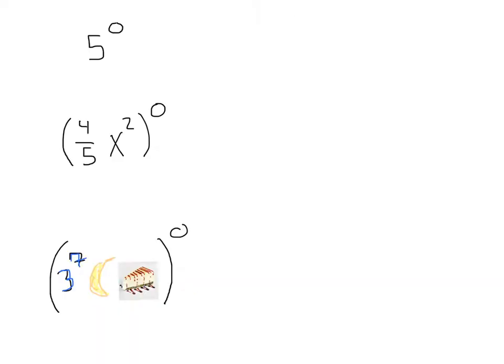Let's do some quick practice to make sure you have the hang of it. Here we have 5 to the 0 power. Since it's to the 0 power, that's going to equal 1. Here we've got 4 fifths x squared, all to the 0 power. What do you think about that one? You got it - 1.